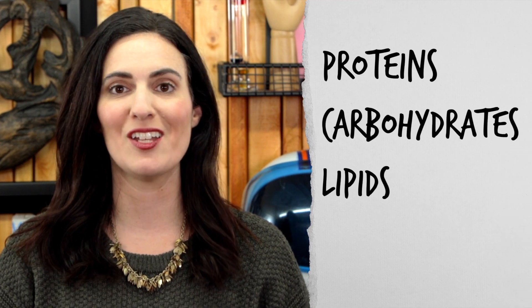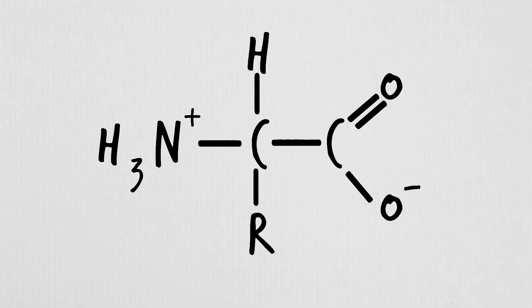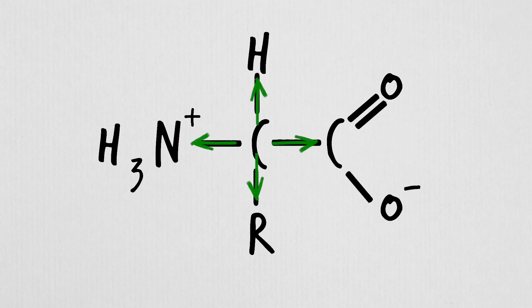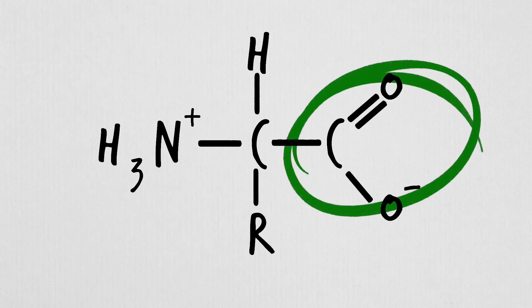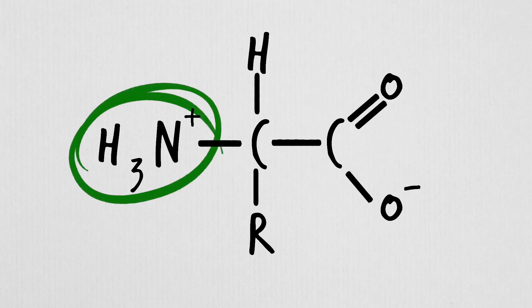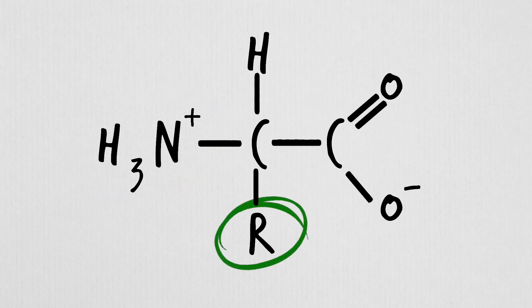The four major biological molecules are proteins, carbohydrates, lipids, and nucleic acids. Proteins are formed from amino acid monomers, which have one central carbon atom that forms four single covalent bonds — one to hydrogen, another to a carboxyl group, a third to an amino group, and fourth to a variable R group. This R group is a substitute for different side chains that give each of the 20 different amino acids their unique chemical properties.